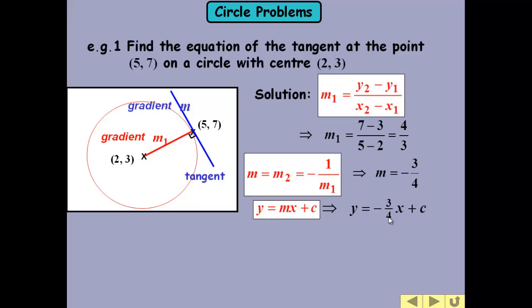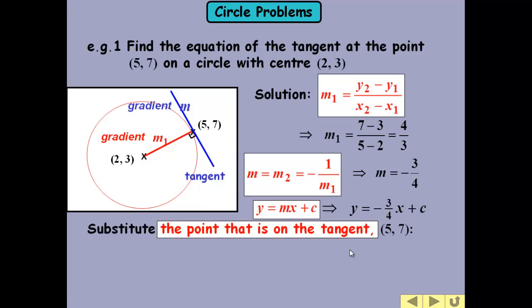So we put the minus 3 quarters in here. The point on the tangent we've got is 5, 7. So we put those values in. Find out c. We get this equation. We generally don't leave numbers in the denominator, do we? So we multiply through by 4 to get rid of those. And we end up with an equation that looks like that.